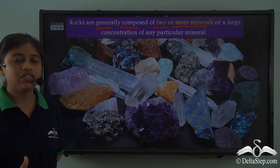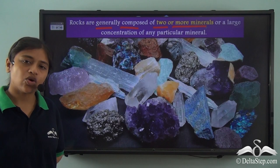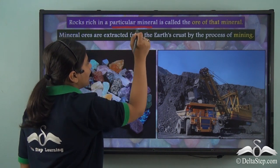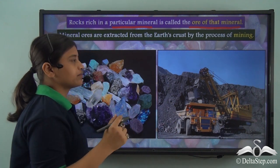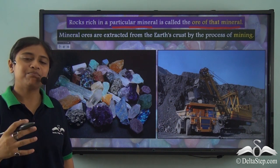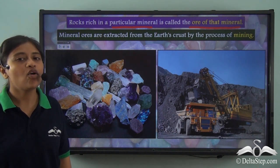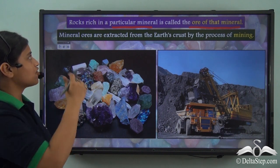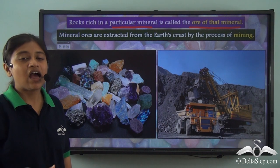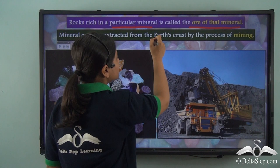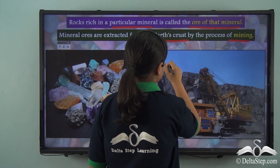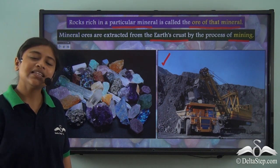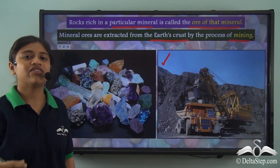Just like the plate of mixed noodles, rocks contain two or more minerals or a large concentration of a particular mineral. Rocks that are rich in a particular mineral are called the ore of that mineral. For example, the ore of gold contains a high concentration of the mineral gold. These mineral ores are extracted from the earth's crust by the process of mining. Mining helps us obtain or extract these mineral ores from the earth's crust, and from these mineral ores we can obtain the minerals that have a high economic value.